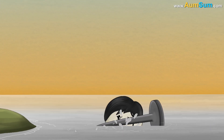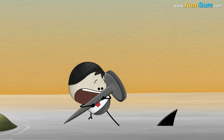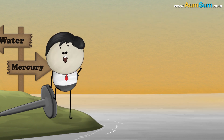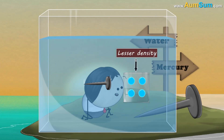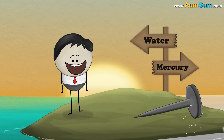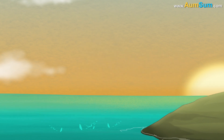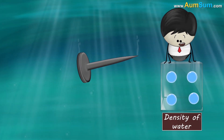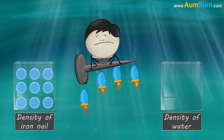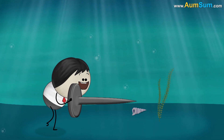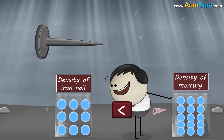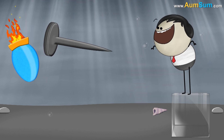Do you know why the iron nail sank in water and floated on mercury? It is because of density. Density is the measure of mass present per unit volume. Lesser the density of the fluid, lesser will be the upward force exerted by the fluid on the object placed in it. The iron nail sinks in water because the density of water is comparatively less than the iron nail — the upward force exerted by it on the nail is less, hence the nail sinks. However, as the density of mercury is comparatively more than the iron nail, the upward force exerted by mercury is more, hence the nail floats on mercury.